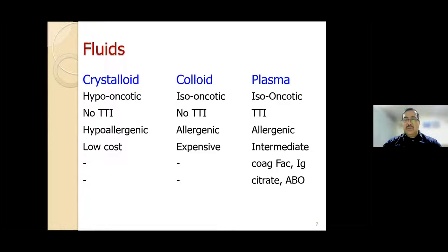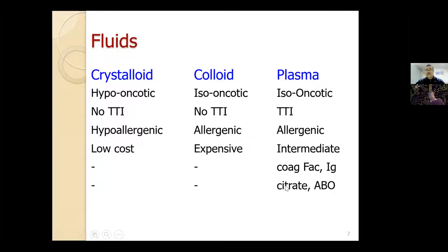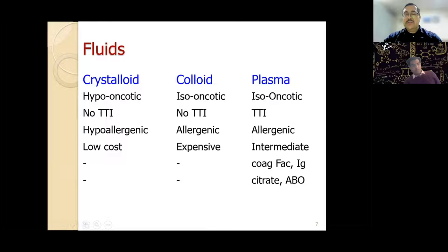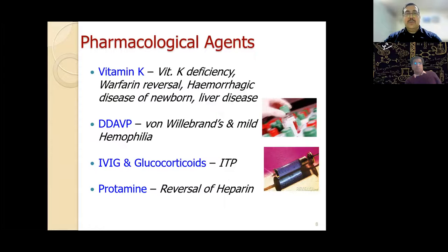Plasma can cause allergic reactions—allergic reactions are more common with plasma products than with red cells. Crystalloid is available at low cost even in primary healthcare centers. Colloid is expensive, and plasma cost is intermediate. Plasma has the advantage of containing coagulation factors and immunoglobulins, but the disadvantage is that it contains citrate, which can cause chelation of ionized calcium, and ABO group compatibility must be kept in mind when using plasma.